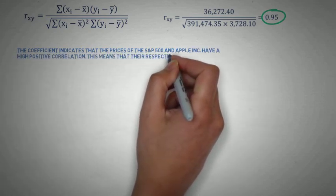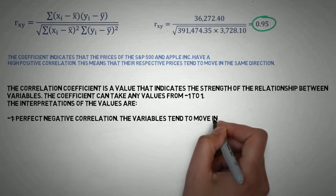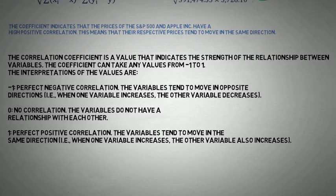So if the value is minus 1, it is a perfect negative correlation; the variables tend to move in opposite directions. If it is 0, then there is no correlation between two variables. And if it is 1, there is a perfect positive correlation, which in our case we had a high positive correlation between the two variables.